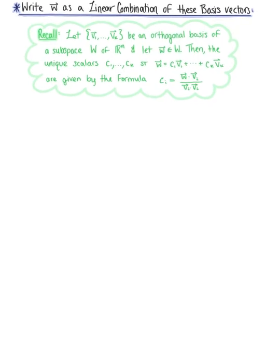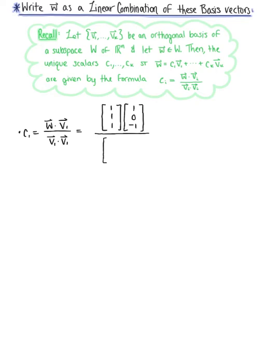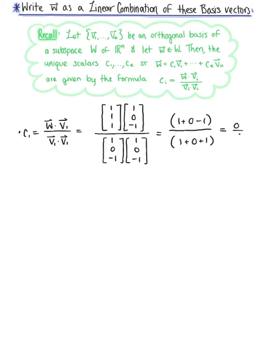We have three cases. Case one: the unique scalar c sub 1 is defined as vector w dotted with vector v sub 1 all over the dot product of vector v sub 1 with itself. Vector w has components 1, 1, 1, and we dot this with vector v sub 1 which has components 1, 0, negative 1, divided by v sub 1 dotted with itself. In the numerator we have 1 plus 0 minus 1; in the denominator we have 1 plus 0 plus 1, giving us 0 over 2, which equals 0.